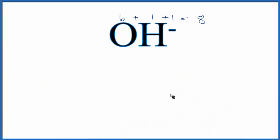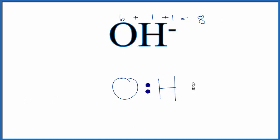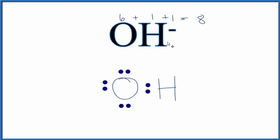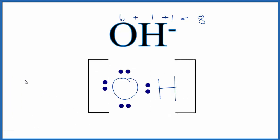We only have two elements, so they just go next to each other — oxygen and hydrogen. We have 8 total valence electrons, so we start by putting a pair of electrons between the two atoms to form the chemical bond. Hydrogen only needs two valence electrons, so we're done with hydrogen. We put the rest around oxygen: 2, 4, 6, 8 — oxygen has an octet. We put brackets around the structure and write the minus charge outside. That's the Lewis structure for OH⁻.